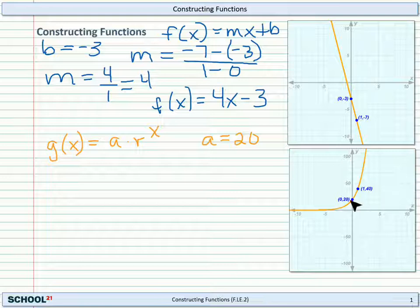So when we went from 0, 20 to 1, 40, we increased by 1. So what did we multiply 20 by to get 40? Well, we multiplied it by 2. So now we can see that r equals 2.